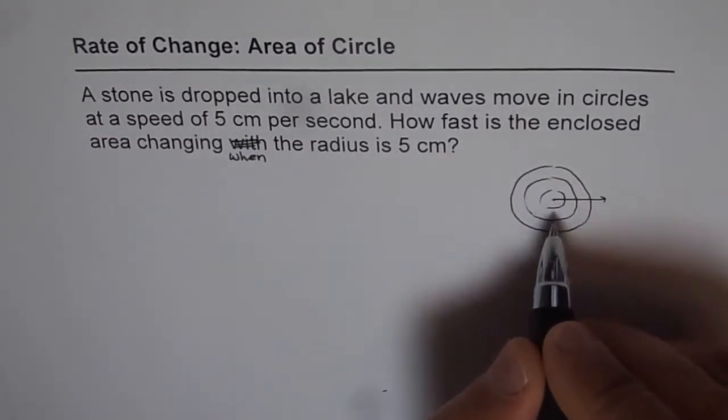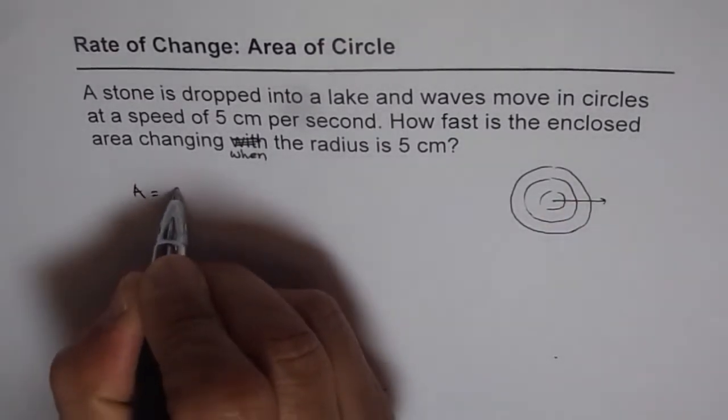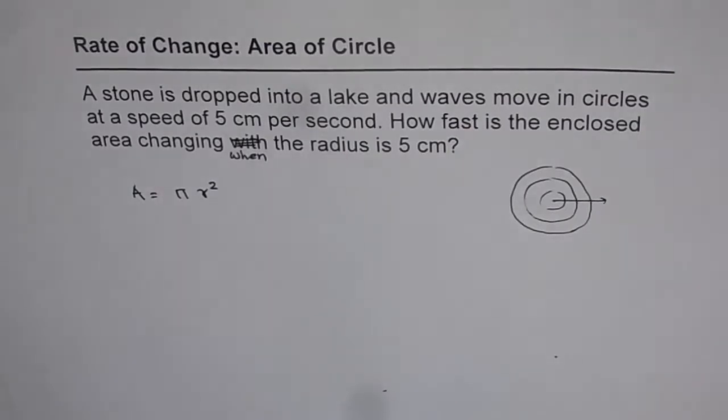So let's consider r to be the radius at any instance of time. In that case, area will be how much? So area will be πr².